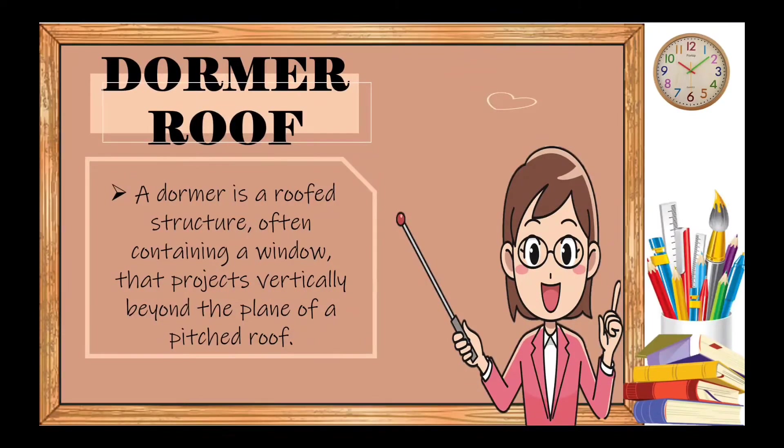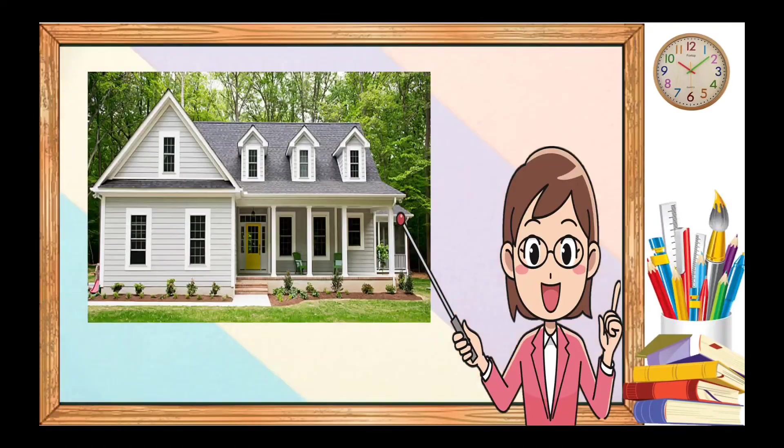Next, we have dormer roof. It is a roof structure often containing a window that projects vertically beyond the plane of a pitched roof. It is a window and a roof protruding from the existing slope of the roof. This creates usable space out of the roof that adds natural light and headroom.